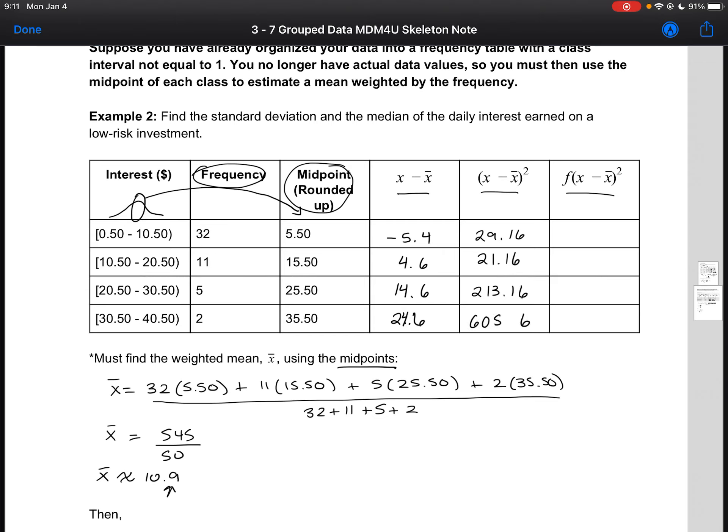605.6. And then we're going to move on to our last column, which is just our frequency. So column 2. And we're going to multiply by, let's see, column 1, 2, 3, 4, 5 in this one. Our deviations squared, which is going to give us 933.12, 232.76, 1065.8, 1210.32.